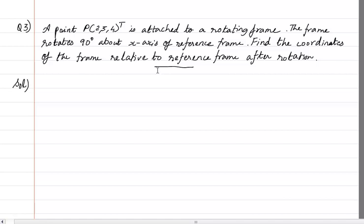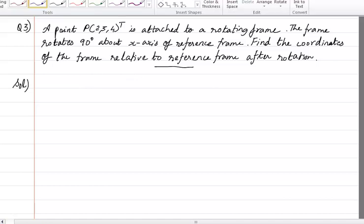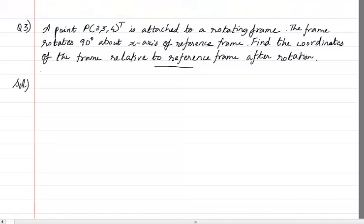The frame rotates 90 degrees about the x-axis of the reference frame. Find the coordinates of the frame relative to the reference frame after rotation. We have already seen the simple equation that we can use. We are going to first write what is P_NOA. The vector P_NOA according to the given value is (2, 3, 4) with a scaling factor of 1. We write a scaling factor of 1 because it's a 4x4 matrix, so we have to have a fourth row which is the scaling factor.